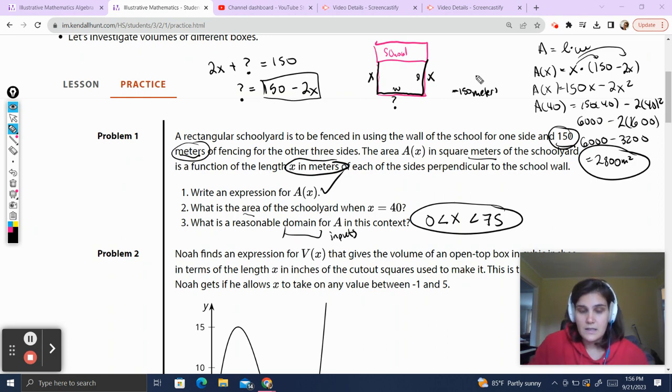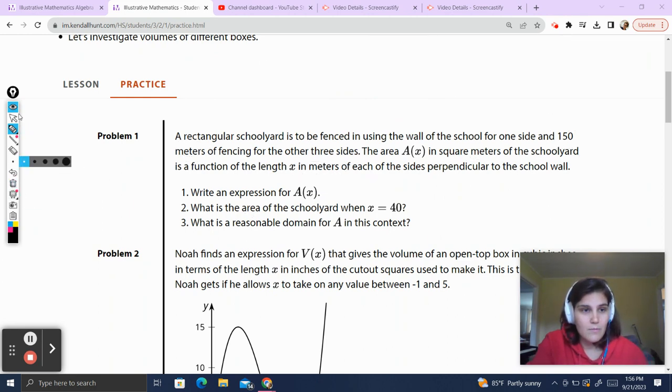And then the longest this length could be, well, the longest it could be and have both sides would be 75, but like a tiny bit smaller than 75. So we're going to say it's less than 75. So x is somewhere between 0 and 75. And we know that because the total amount we have would be 150. So if like this was 75 and that was 75, that would be 150, and that wouldn't leave any for the width. So it has to be less than 75, but we could also have really itty bitty walls and have the width be almost 150 meters.